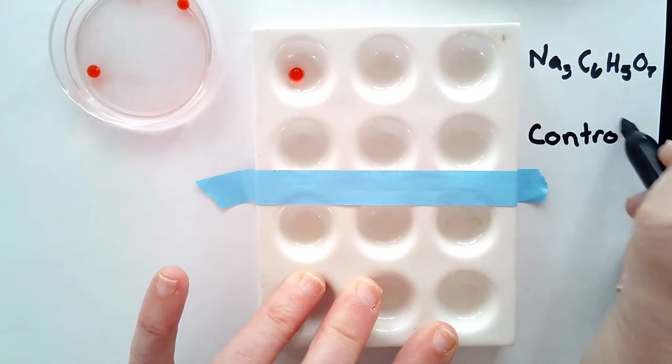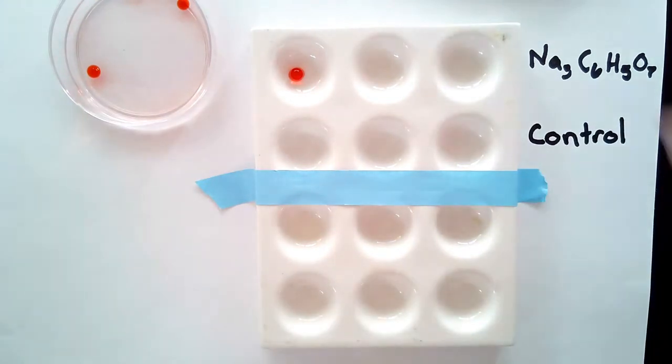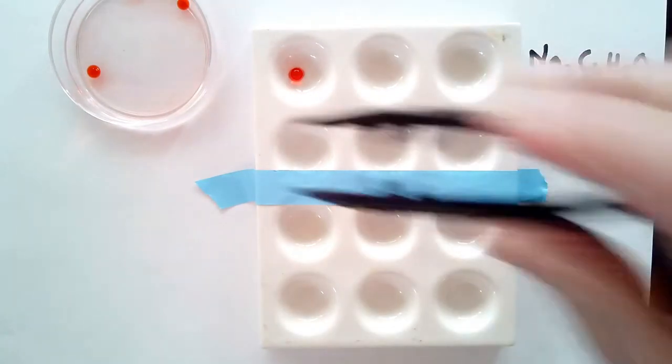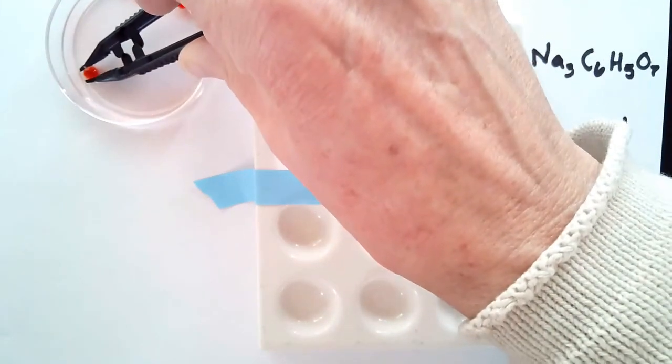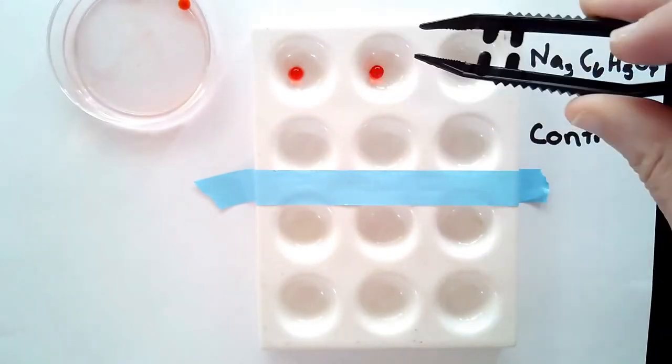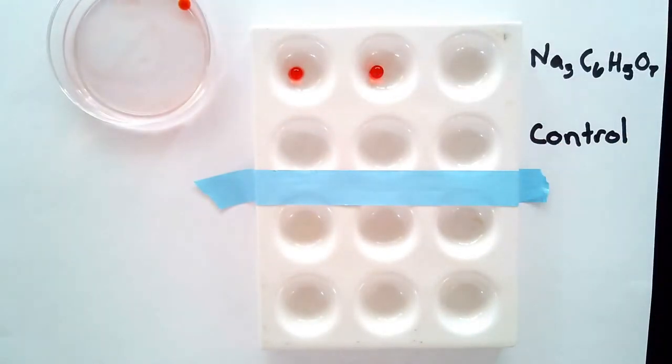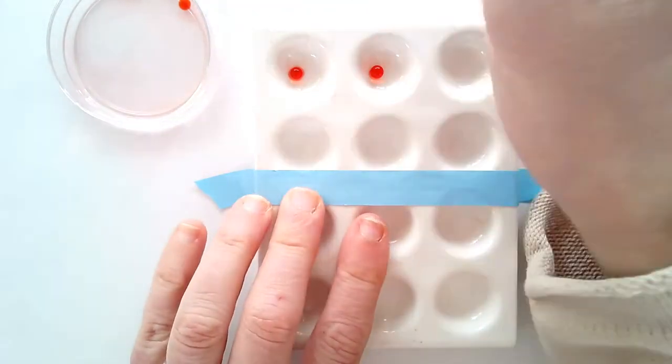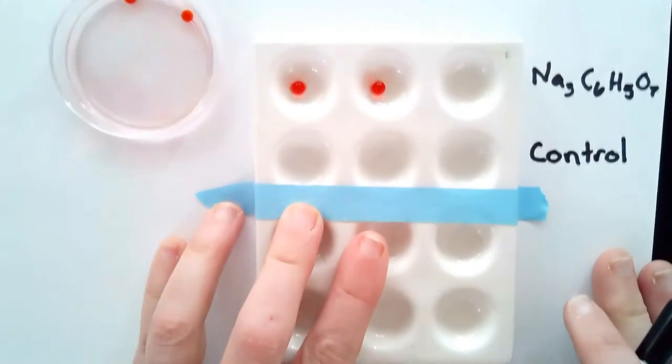You also want to place beads in the second row which will serve as your control. The other thing that's important to label is what the beads are made from. Are these calcium alginate beads, copper alginate beads, or sodium alginate beads? Make sure you also label at the top.